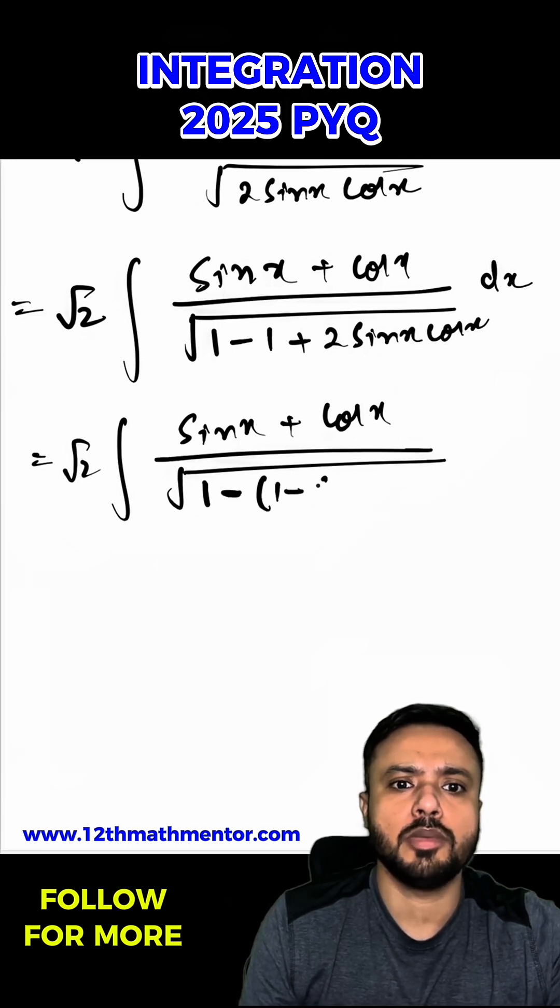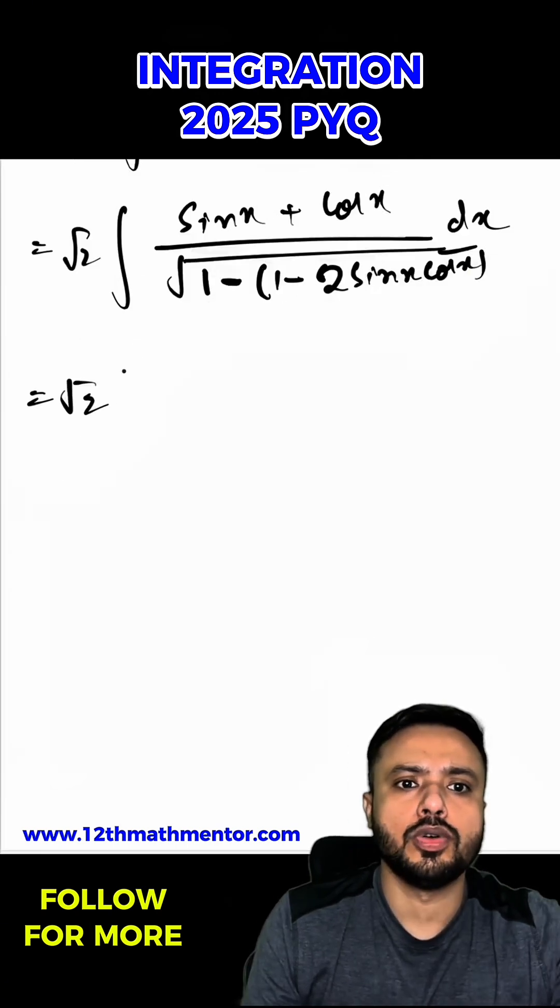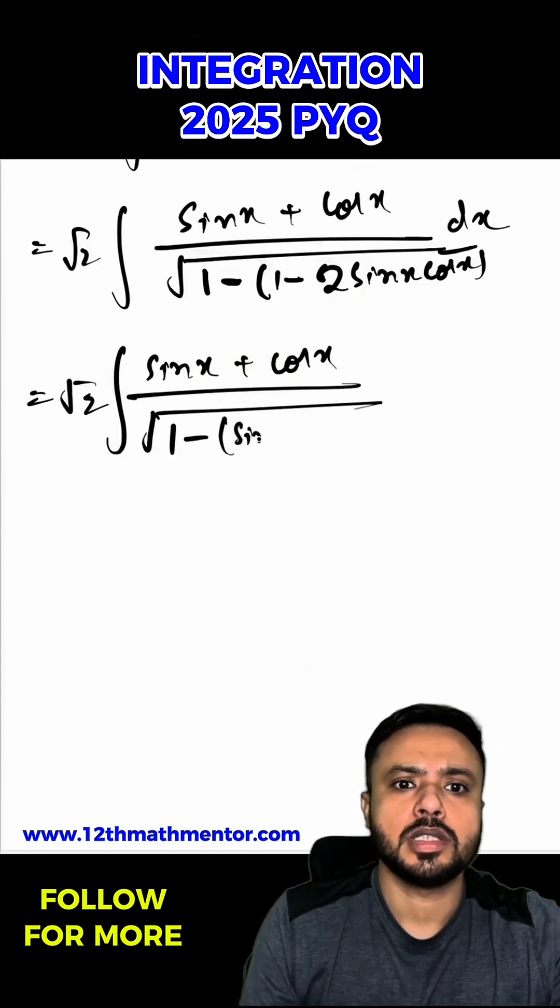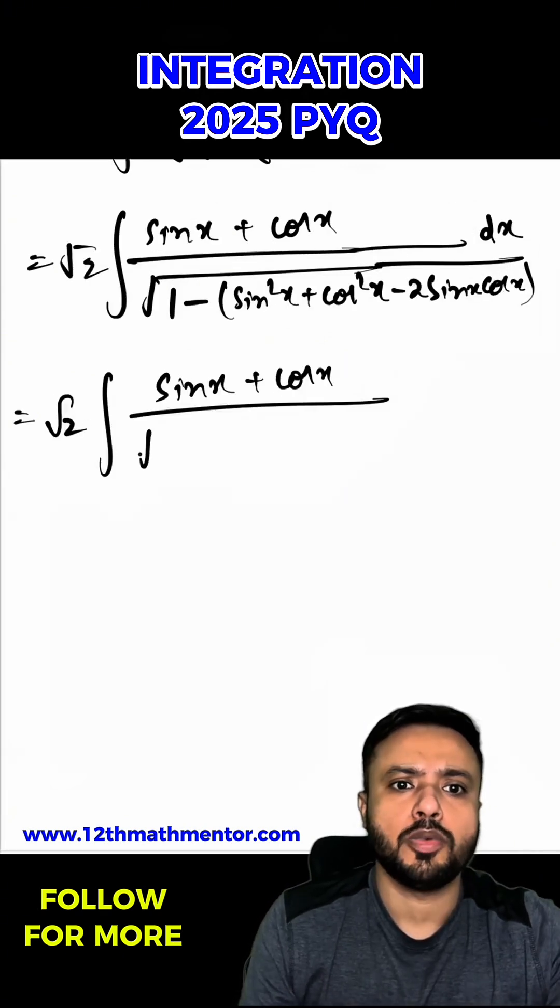I can write as 1 - (1 - 2 sin x cos x) dx, which is √2 integral of (sin x + cos x) by √(1 - (sin² x + cos² x - 2 sin x cos x)) dx.